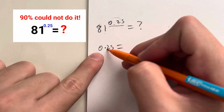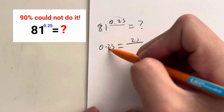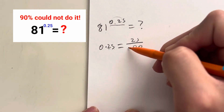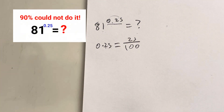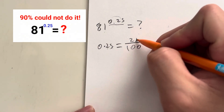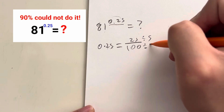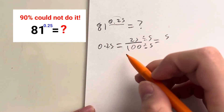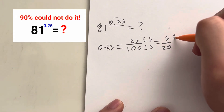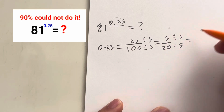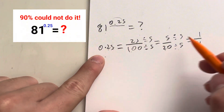We take the numbers after the decimal place, which in this case is 25. The total number of digits you have, you write that many zeros and put a 1 in front. So 0.25 is the same as 25 over 100. Let's simplify: 25 and 100 are both divisible by 5. 25 divided by 5 is 5, 100 divided by 5 is 20. Then 5 and 20 are also divisible by 5: 5 divided by 5 is 1, 20 divided by 5 is 4. So 0.25 is the same as 1 fourth.